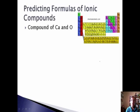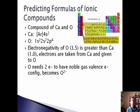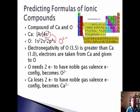Let's talk about how to predict formulas of ionic compounds. For a compound of calcium and oxygen: calcium's electron configuration is argon 4S2, and oxygen's is 1S2 2S2 2P4. Since oxygen's electronegativity is greater than calcium's, this is an ionic bond — electrons are taken from calcium and given to oxygen. Oxygen needs 2 electrons to achieve noble gas configuration, so it becomes O2-. Calcium donates its 2 electrons and becomes Ca2+. When we put them together, we get CaO, because a +2 and -2 charge cancel out.